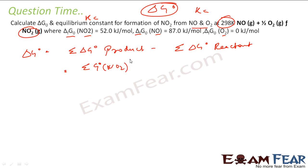For products, I have NO2 only, right? That is delta G naught of NO2 minus sum of delta G naught of reactants, that is O2 and NO. So what is delta G naught of O2? One-half into delta G naught of O2 plus delta G naught of NO. Let us put the values.